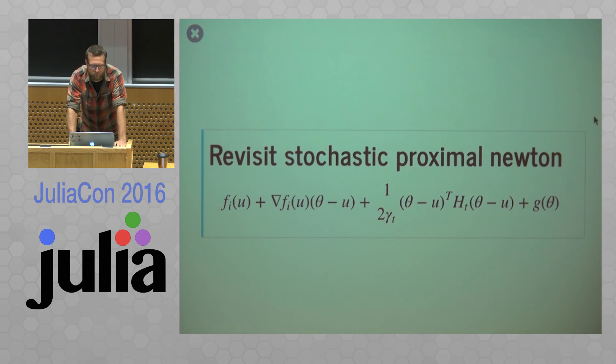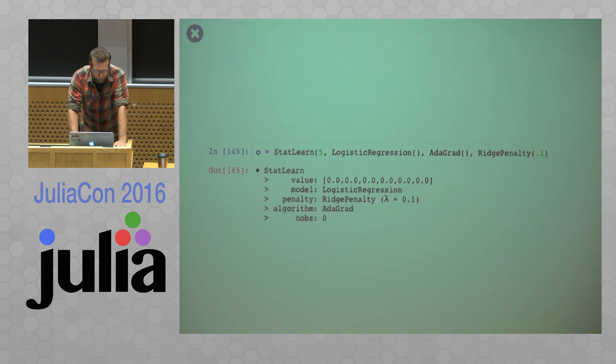So this is actually implemented in, well, I would say, impressively few lines of code, and that's not to my, I don't know, boasting. It's just some of the great features in Julia. So here I'm creating a StatLearn object, say I have five predictors, and I want to do logistic regression with AdaGrad and a ridge penalty. So that's what that looks like there for constructing it.